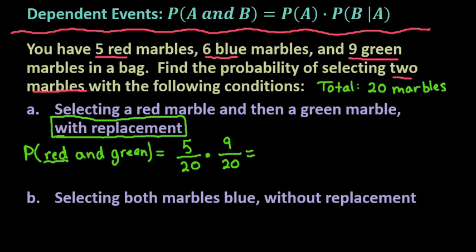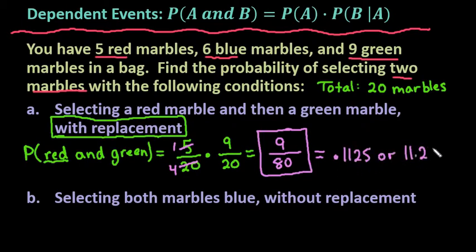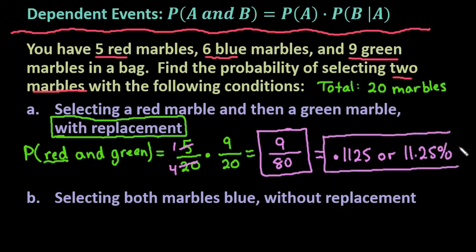Now we just multiply the two probabilities together and simplify. I prefer to simplify before multiplying, so 5 over 20 reduces to 1 over 4. Then multiplying across: 1 times 9 gives me 9, and 4 times 20 gives me 80. So there's a 9 out of 80 chance of selecting a red marble followed by a green marble. If you divide 9 by 80, you get 0.1125, or 11.25%. Both of these are acceptable ways of writing probabilities, depending on the publisher or situation.